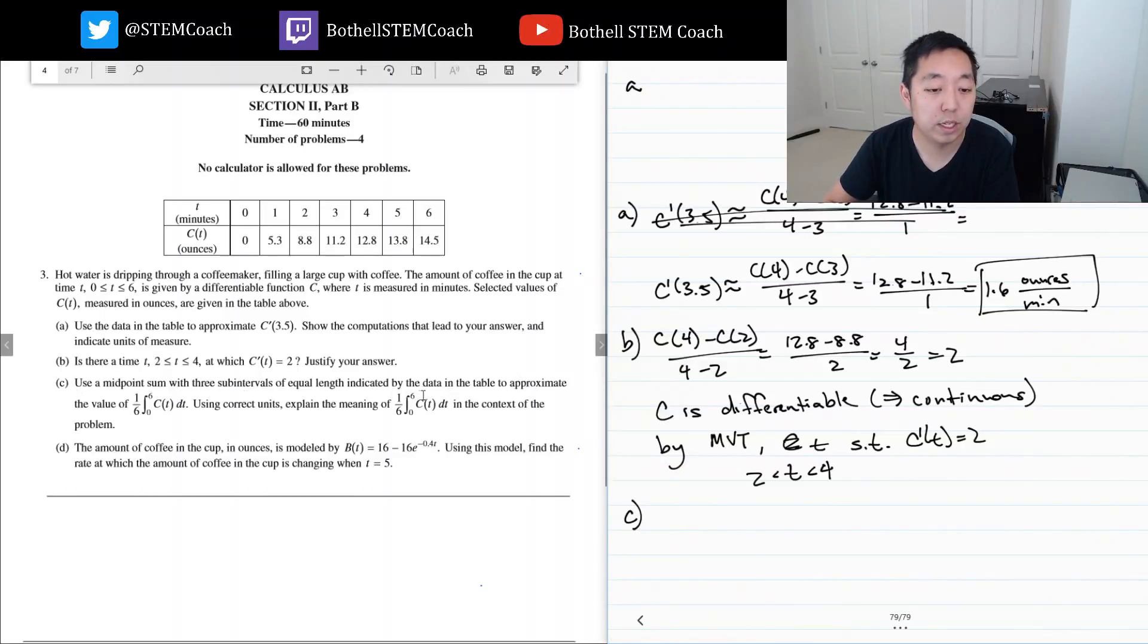Part c: Use the midpoint sum with three sub-intervals of equal length indicated by the data to approximate the value of this integral. Using correct units, explain the meaning in the context of the problem. We have six sub-intervals: 0 to 1, 1, 2, 2, 1, 2, 3, 4, 5, 6. Midpoint sum, three sub-intervals. Okay, I see. So the sub-intervals are zero to two, then two to four, then four to six. Those are my intervals.